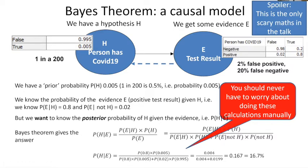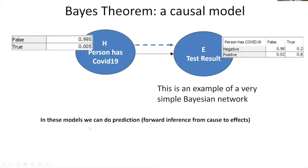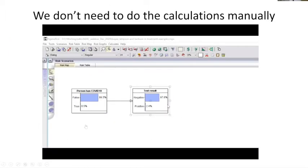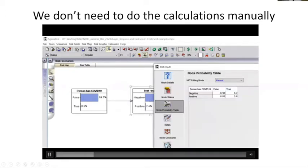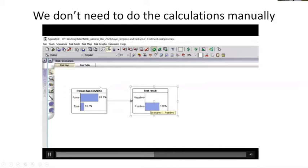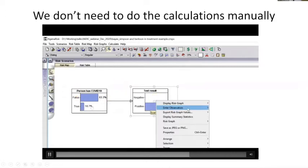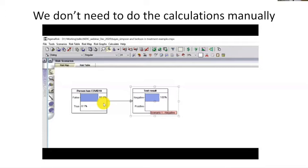The good news is you never have to do these calculations manually, because what we have here is a very simple Bayesian network — just a directed graph with associated probability tables alongside each node. In these models, we can predict forward from causes to effects and infer backwards. Here's that model running in one of these tools. I can select the node and look at the node probability table. I can enter an observation of 'positive' on the test result, and the model automatically updates the probability. If I put 'negative' in and run the model again, you can see it updates to a very low probability — 0.1% — that the person has COVID.